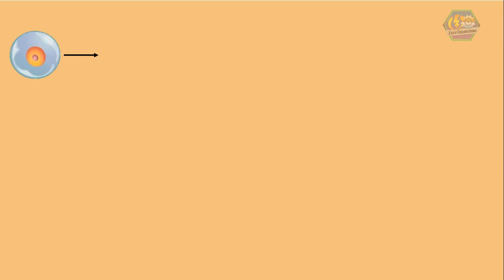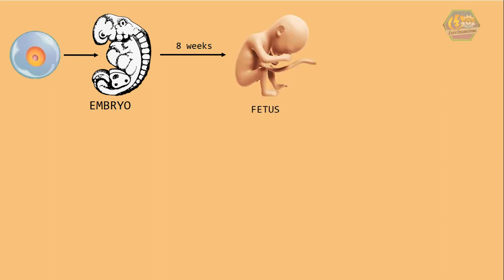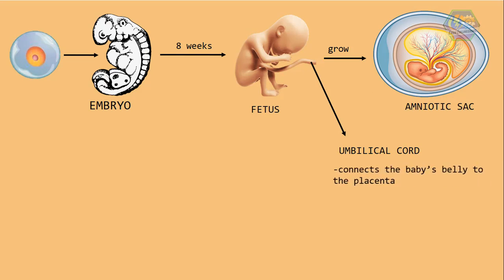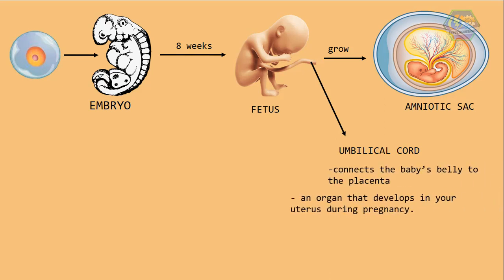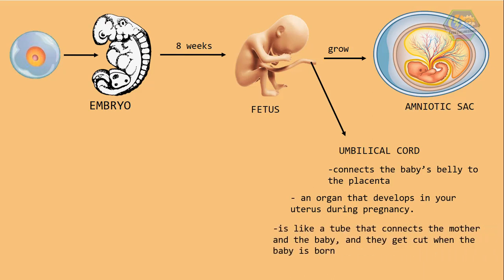The cells begin to develop into a baby. At first, the developing baby is called an embryo. After about 8 weeks, the baby is called a fetus. In the uterus, the baby grows inside a pouch called the amniotic sac. Then a bundle of blood vessels called the umbilical cord connects the baby's belly to the placenta, an organ that develops in the uterus during pregnancy. This cord is like a tube that connects the mother and the baby, and it gets cut when the baby is born.